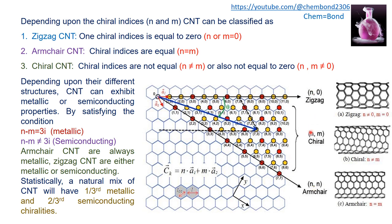Cutting graphene along another direction produces armchair nanotubes, and the possibility that is neither armchair nor zigzag is known as chiral. This is defined through the roll vector Ck = n·a1 + m·a2, where a1 and a2 are lattice vectors, and m and n indicate how many times each vector is repeated. a1 represents the zigzag-line orientation and a2 represents another zigzag direction.